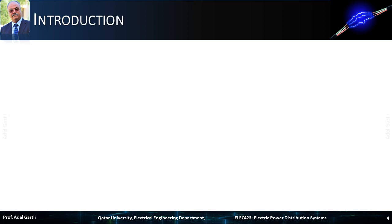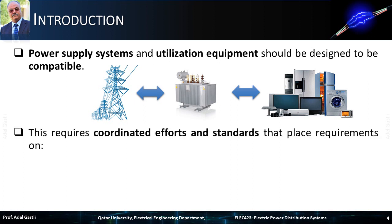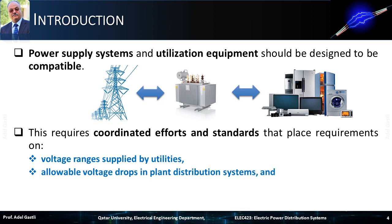In general, power supply systems and utilization equipment should be designed to be compatible. This requires coordinated efforts and standards that place requirements on: voltage ranges supplied by utilities, allowable voltage drops in plant distribution systems, and voltage ranges for utilization equipment. Without these requirements, it will be difficult to connect utilization equipment to the power supply systems.